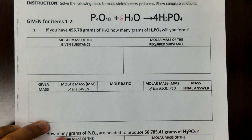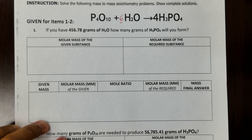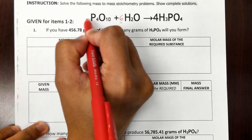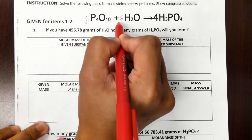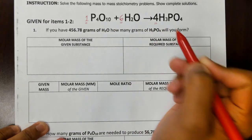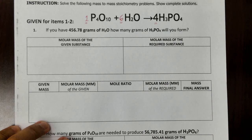By putting a coefficient of 6, let's check oxygen: 6 times 1 gives 6 oxygen, plus 10 gives a total of 16 oxygen. On the right side, 4 times 4 also equals 16 — so oxygen is now balanced. We need this coefficient of 6 so the equation is balanced. Our coefficients are now 1 for P4O10, 6 for H2O, and 4 for H3PO4.